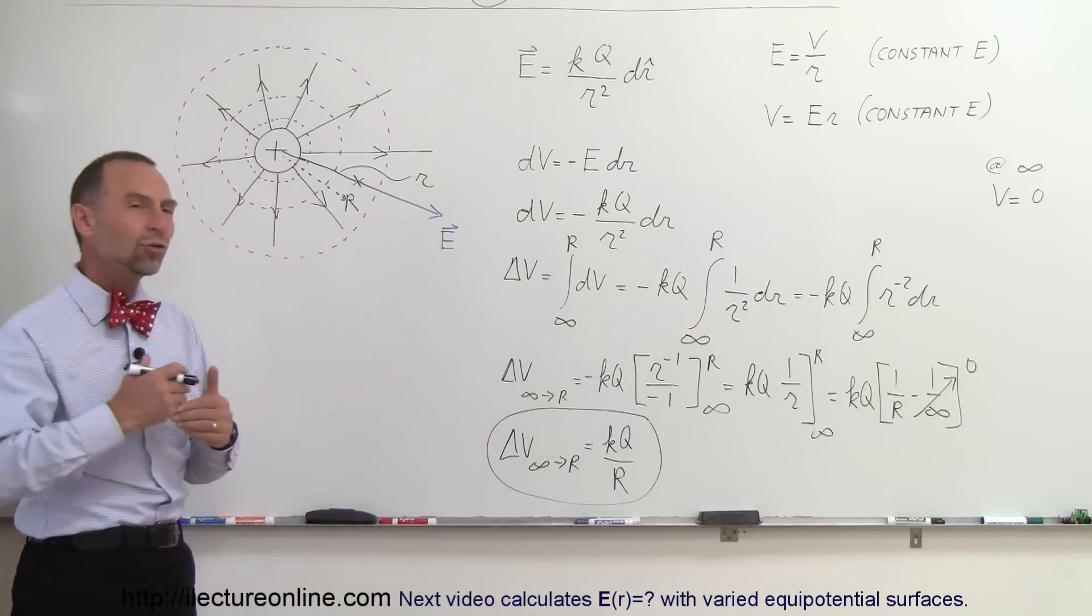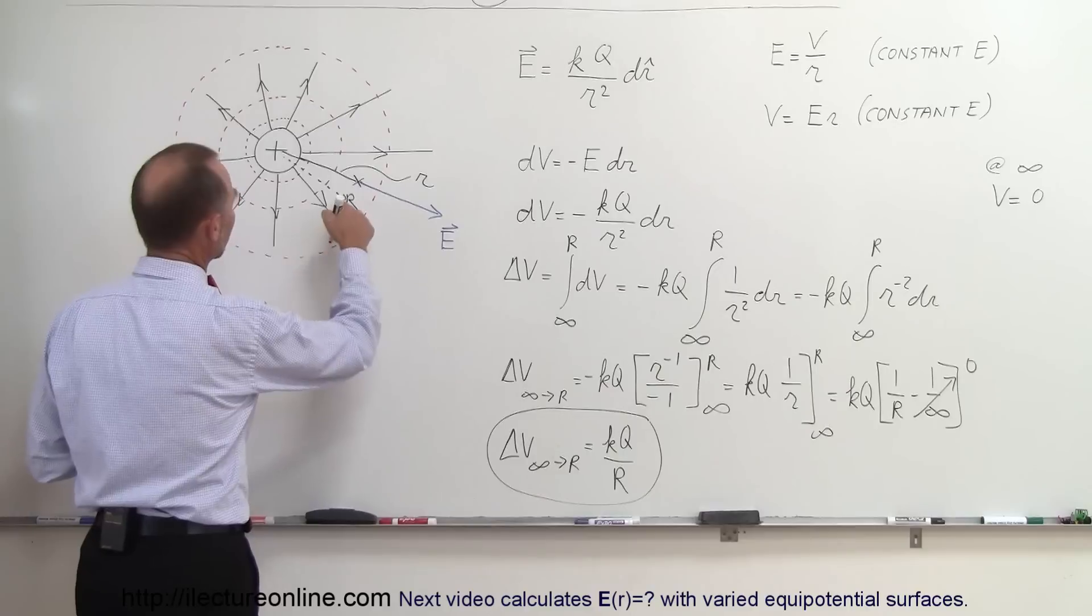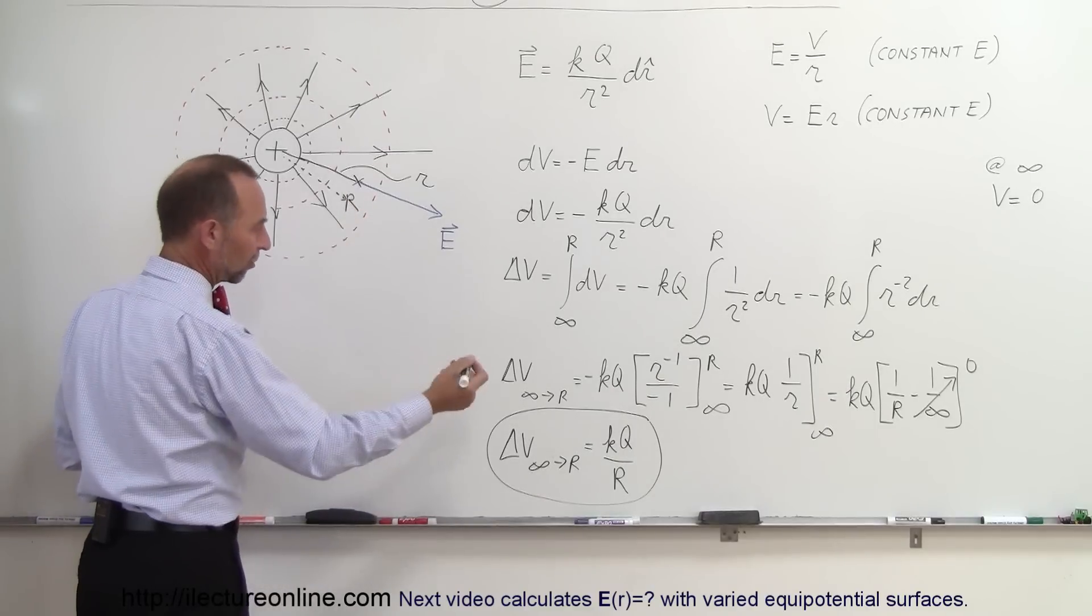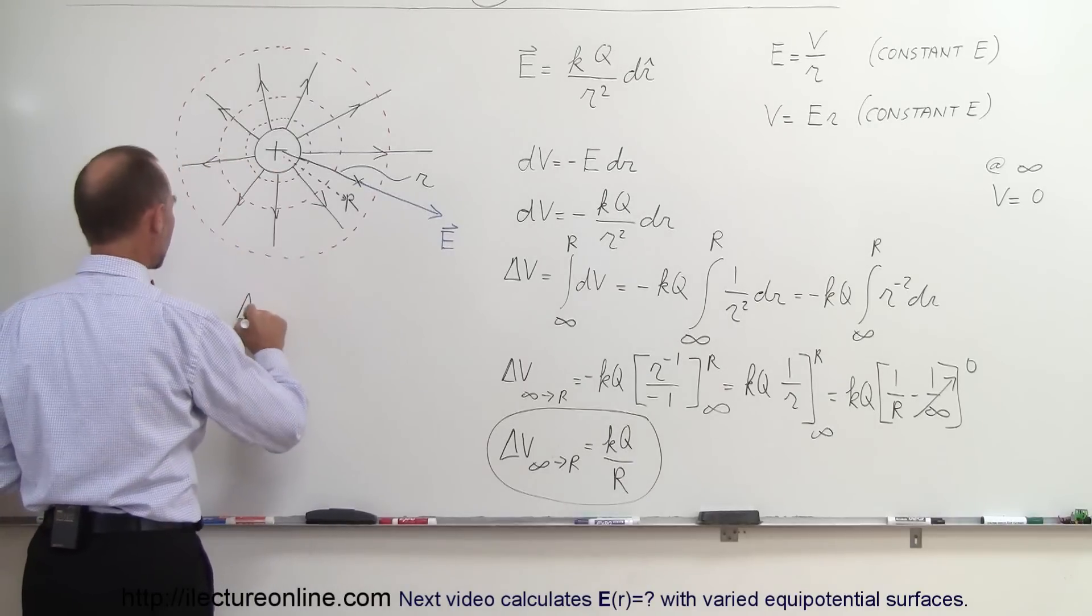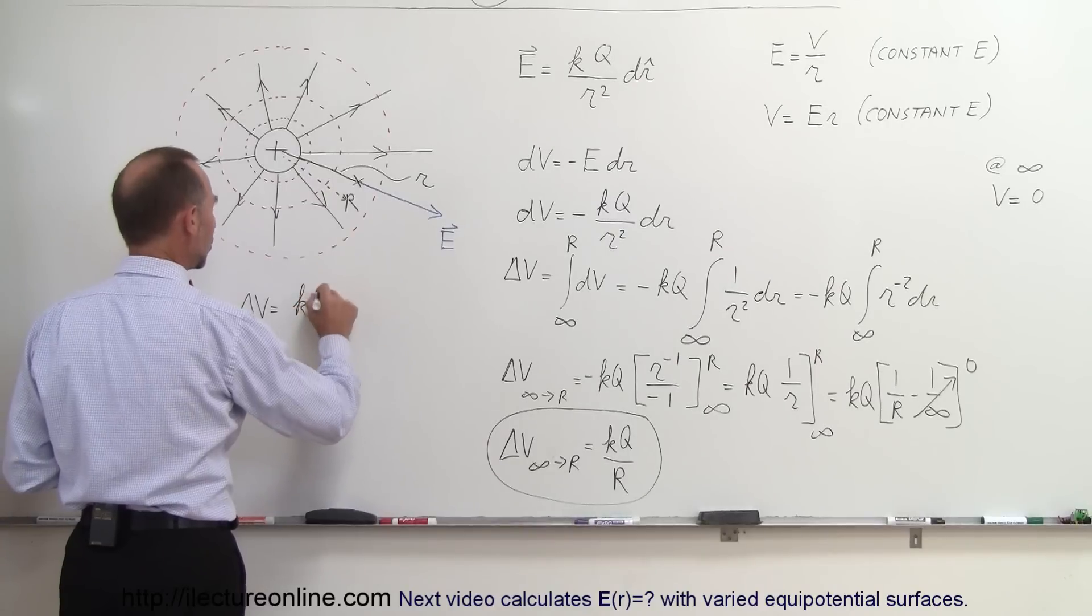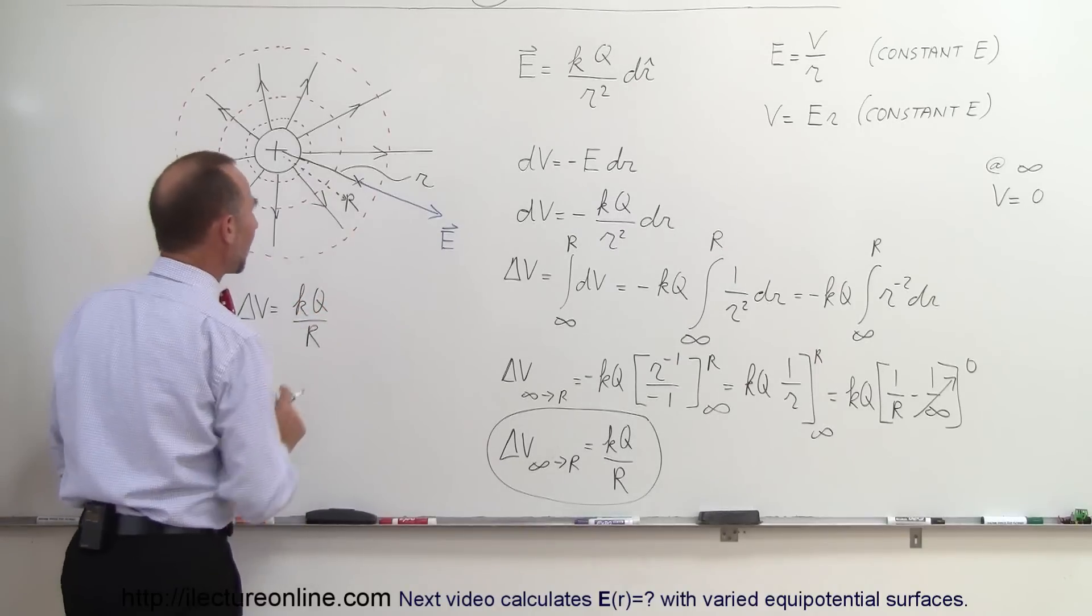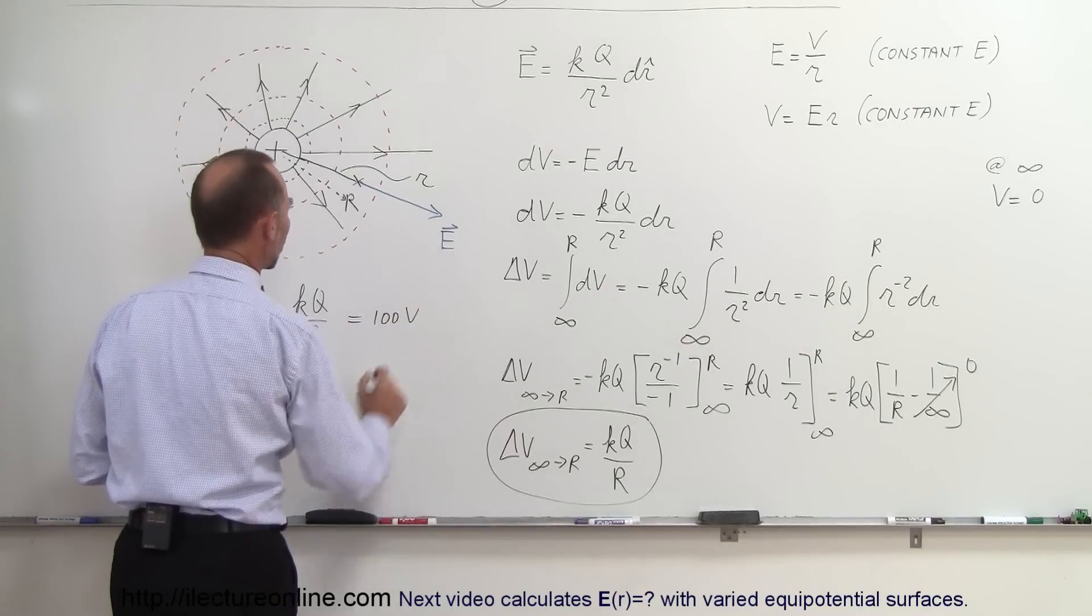Also, how much do we have to move to double our potential? Let's say that we have our potential at R, and let's put R at some value. So delta V will be equal to KQ over R, whatever that happens to be. Let's say that's 100 volts.